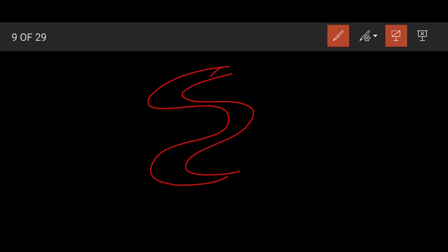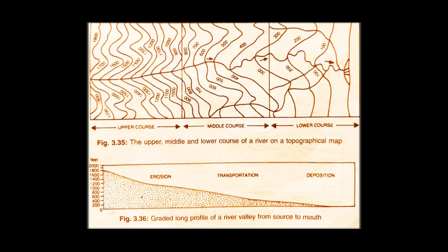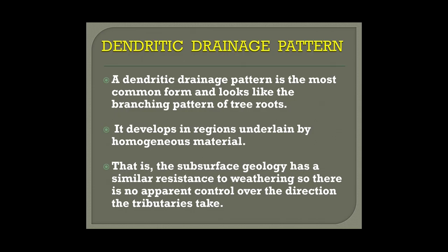When deposition occurs and the river changes its course, a portion gets cut off from the main river — this is called an oxbow lake. These are the features that can be seen in the lower course of the river, where the main work is deposition.